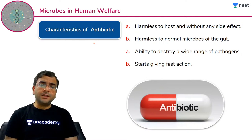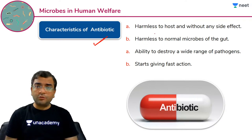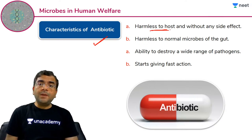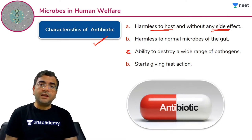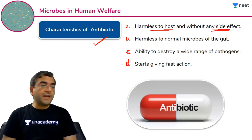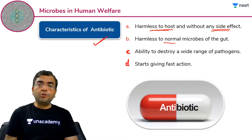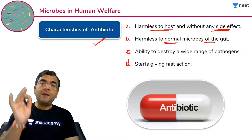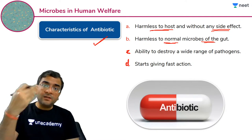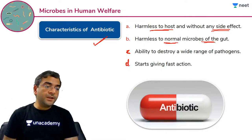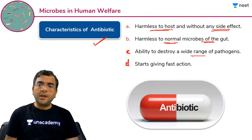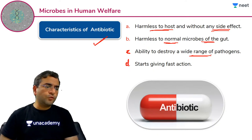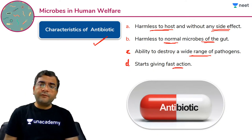Antibiotic ke characteristic kya hone chahiye — dhyan se suniye. Antibiotic should be harmless to host and without any side effect — ye host ke liye harmless hone chahiye aur kisi bhi side effect se yukt na ho. Normal microbes ko nuksaan na pahunchaaye. Ability to destroy a wide range of pathogens — bahut tarah ke pathogens ko wo destroy kar sake. Aur it should start giving action very fast.